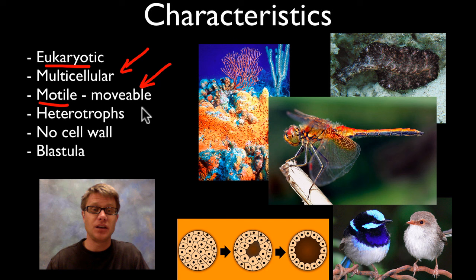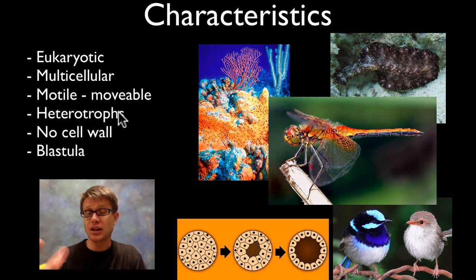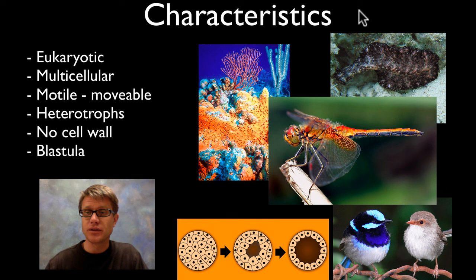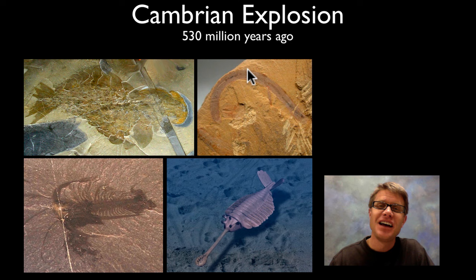They're also heterotrophs — in other words they have to eat their food. So basically what are animals? They're multicellular, movable, heterotrophs. They don't have a cell wall, and in general they'll go through a blastula at some point in their development. This would be a flatworm and an insect, and some things you don't even think of — sponges, for example, are going to be animals as well.